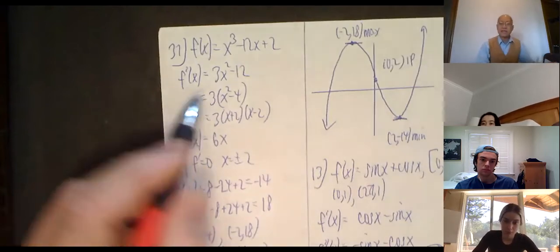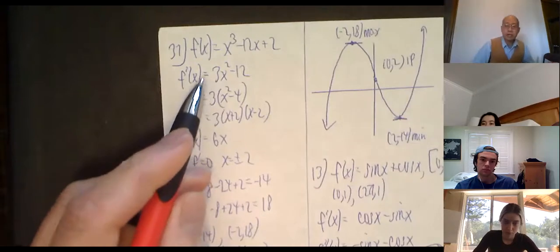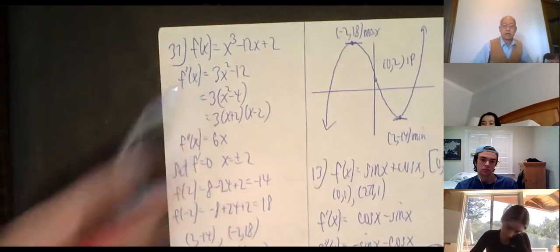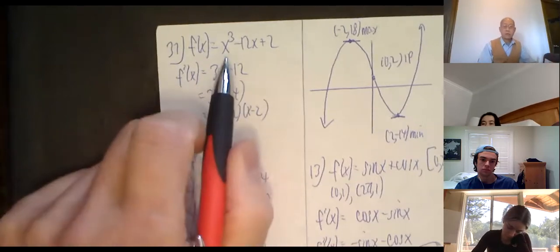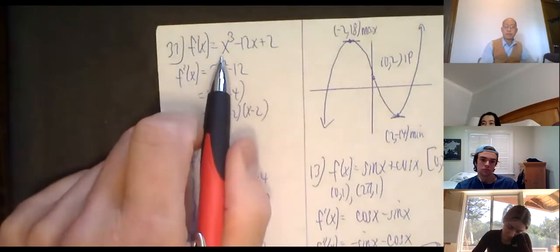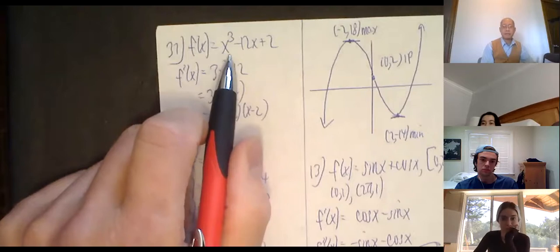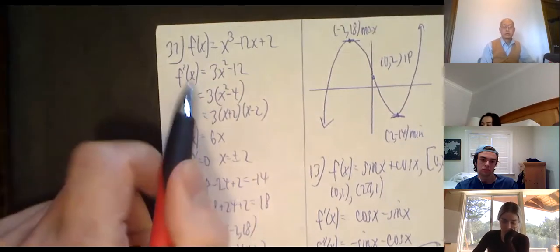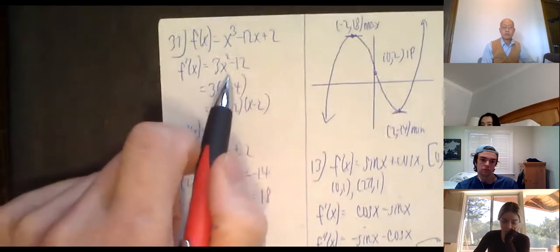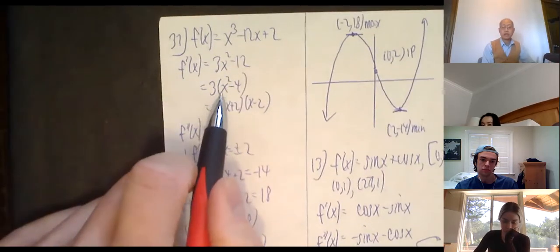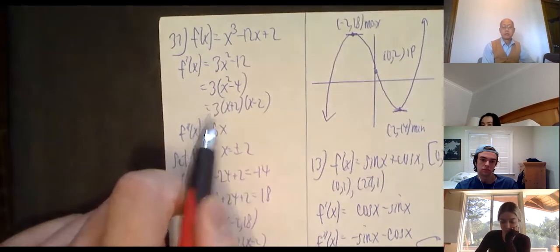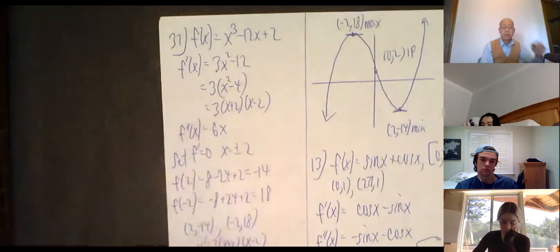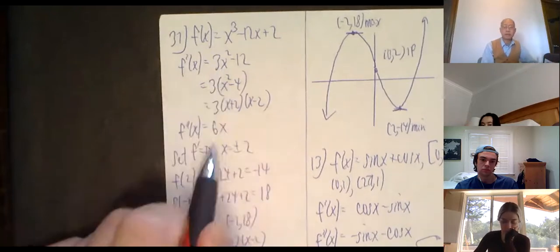We do the whole analysis: where is the function increasing, decreasing, max, min, concave up, concave down, inflection points. This is a polynomial, so it's not too bad. Take the first derivative: f′(x) = 3x² - 12, which factors into 3(x + 2)(x - 2). The second derivative f″(x) = 6x.